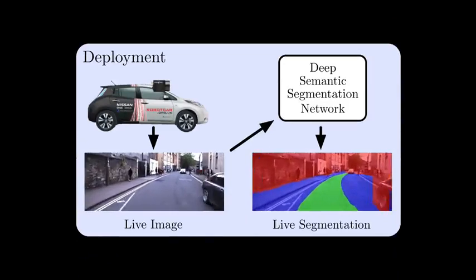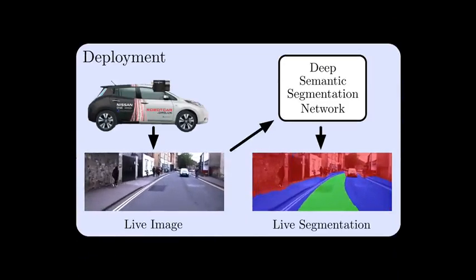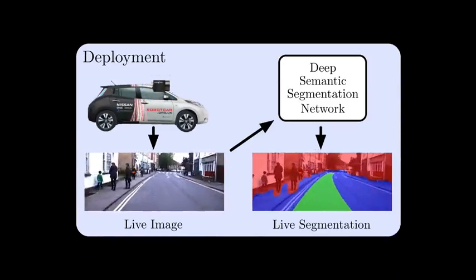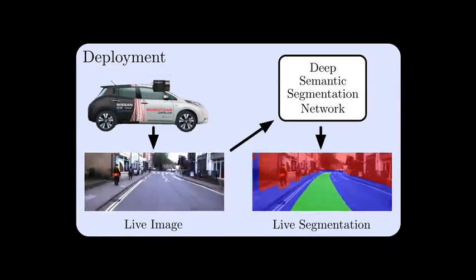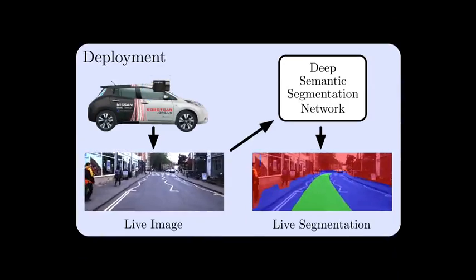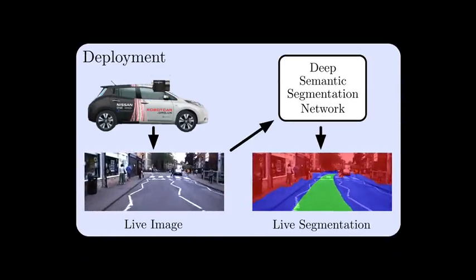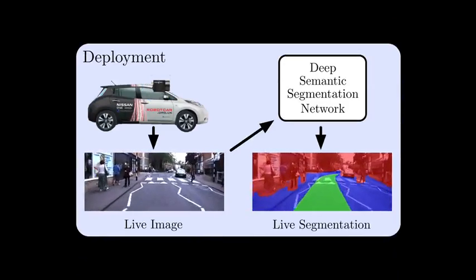At run time we use a vehicle equipped with only a monocular camera. Using the trained network we can segment the proposed path as well as nearby obstacles in real time.